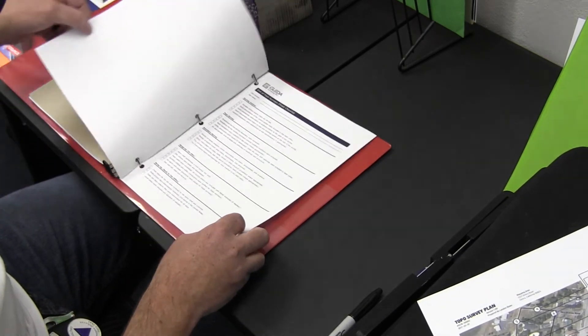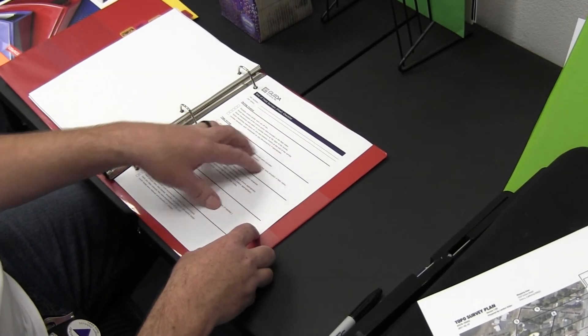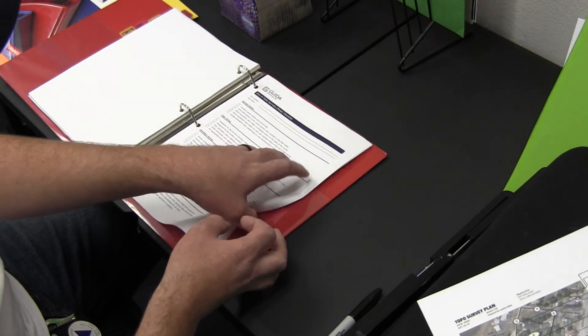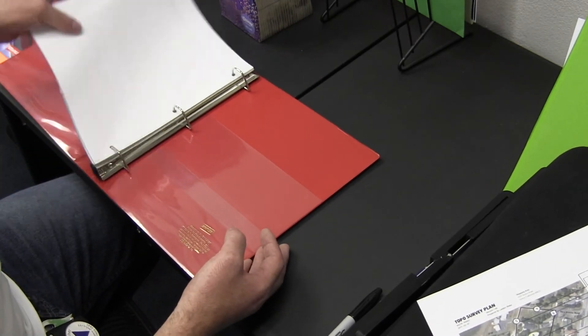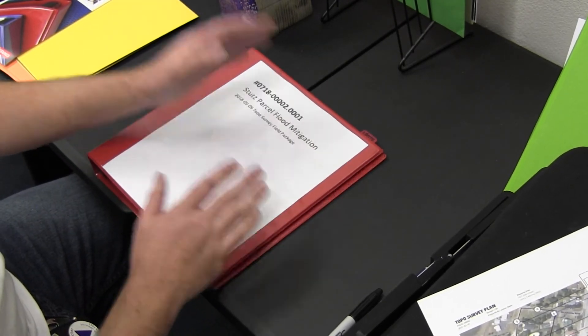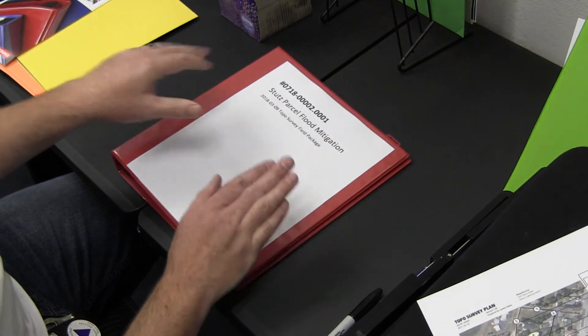This is the final checklist for the last field survey on the job. These are all the things that I want the crew to do before they leave the site. This all comes back in—this binder gets scanned to PDF, stored in the job folder, and this binder gets shelved.